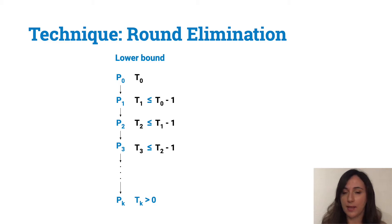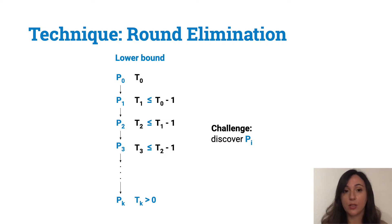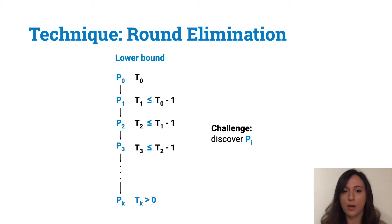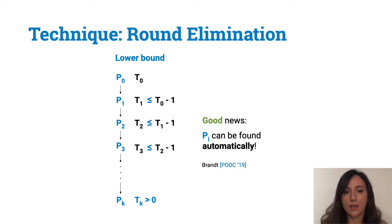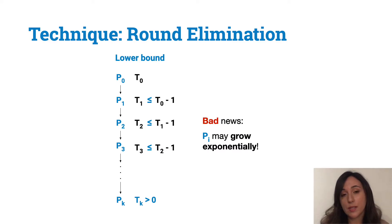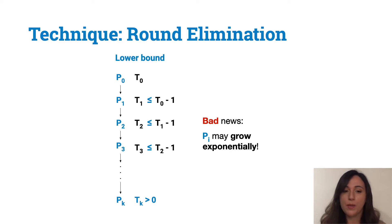This technique has been used since the late 80s. For example, Linial's omega log star n lower bound for MIS is indeed based on such a technique. The challenge, and hence the merit of Linial's lower bound, is to actually discover these problems pi. For long, researchers thought this was more an ad hoc approach rather than a technique. But recently we began to understand the potential of round elimination. In 2019, Brandt showed that this sequence of problems can be found automatically. The bad news is that the description of these problems may grow exponentially, and after just a few steps we are faced with a problem that is too large to handle. One way to avoid this is to try to relax the problems, hoping that the size reduces a lot while the complexity does not reduce by much.